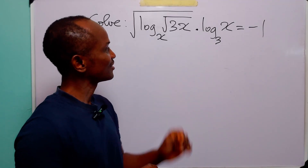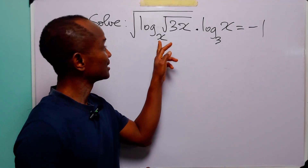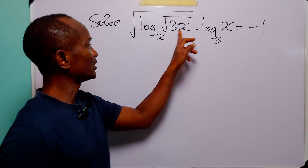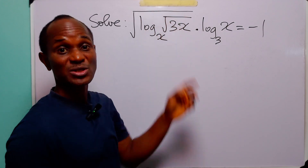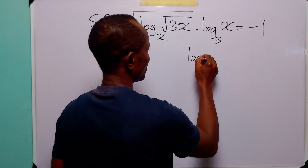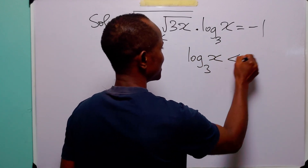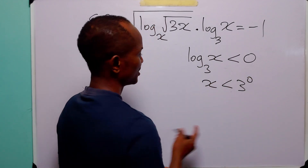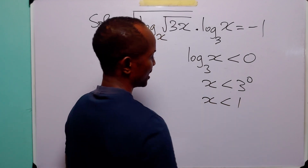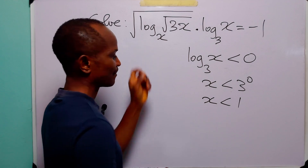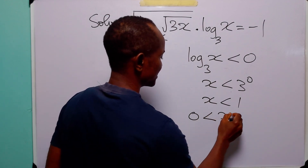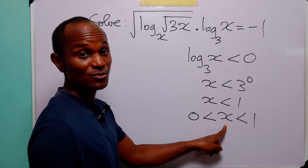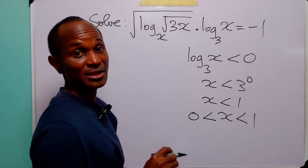Hello and welcome. When you consider this logarithmic equation, you will see that for the product of these two quantities to be negative, log to base 3 of x must be negative — because for all real values of x, this square root must be positive. So log to base 3 of x must be less than 0, which means x must be less than 3 to the power 0, so x must be less than 1. Given that we are dealing with logarithms, 0 must be less than x, which in turn must be less than 1. This is the range of values within which the solution must fall.